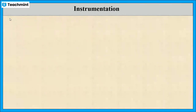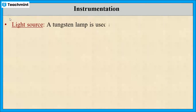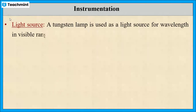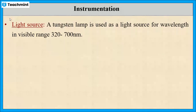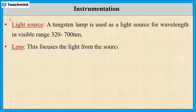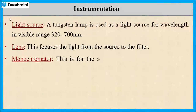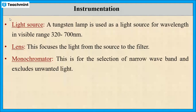Usually, a tungsten lamp is used as the light source, which gives light in the range of 320 to 700 nanometers. The role of the convex lens is to focus the light from the source to the filter. The monochromator, or filter, selects a narrow wave band and blocks the unwanted light.